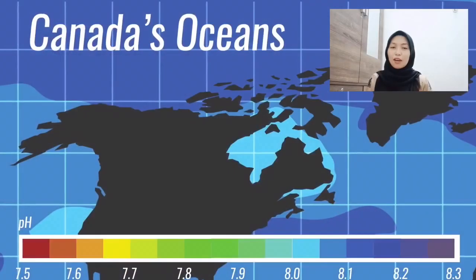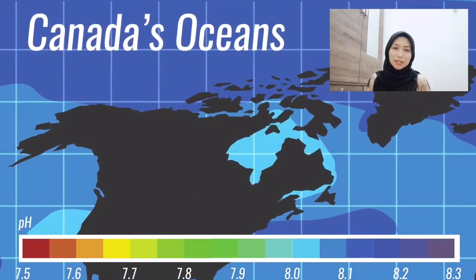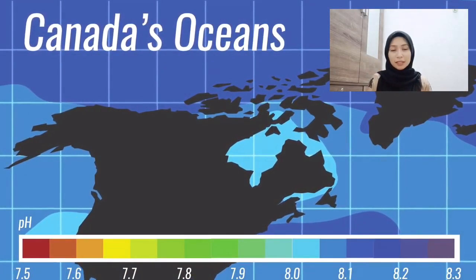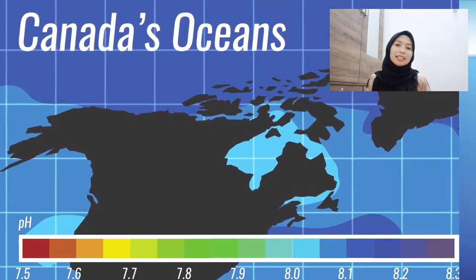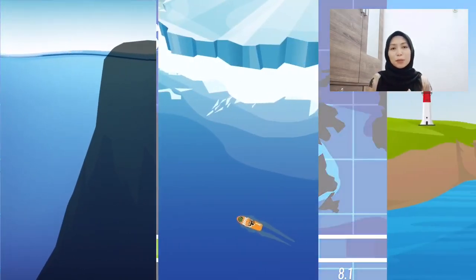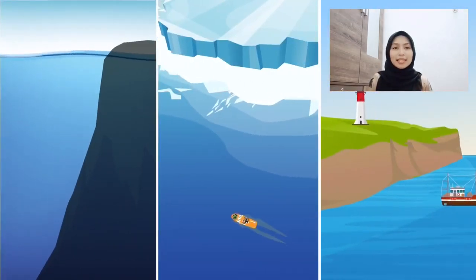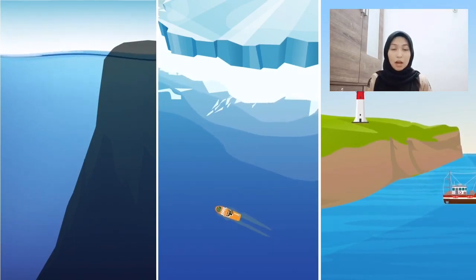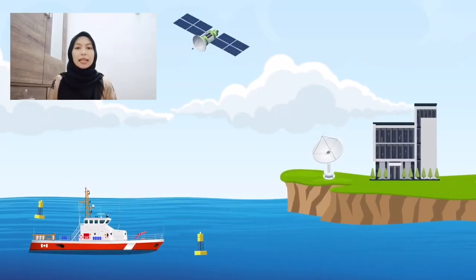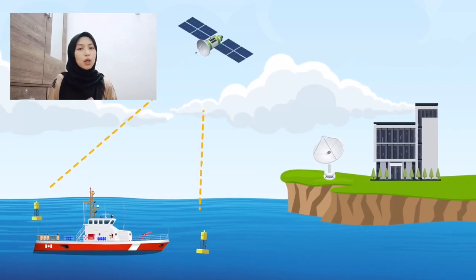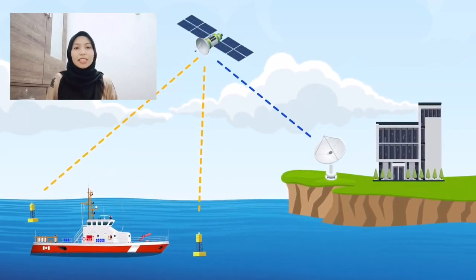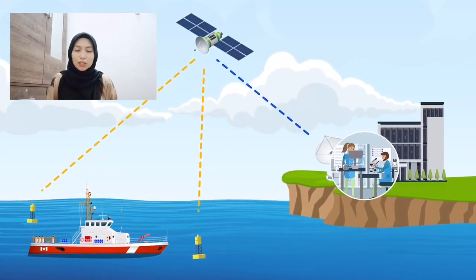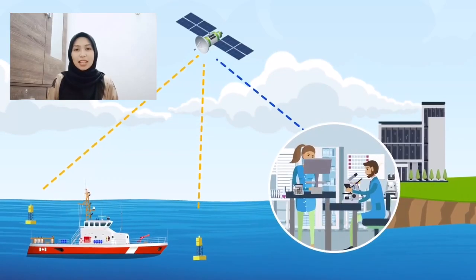Cold oceans are vulnerable to the impact of ocean acidification. Why? Because gases such as CO2 are absorbed more easily in colder water. Furthermore, ocean acidification is taking place in all of the oceans, and conditions in each region further contribute to ocean acidification.